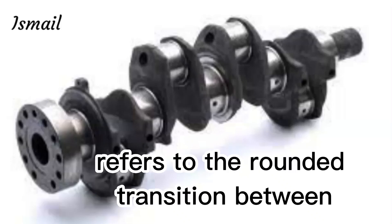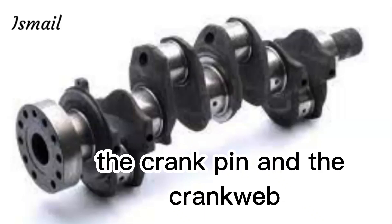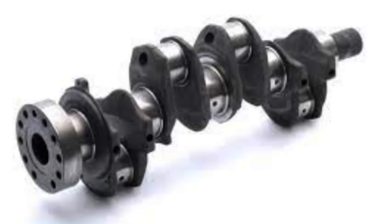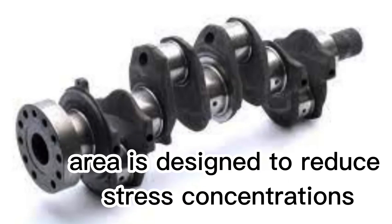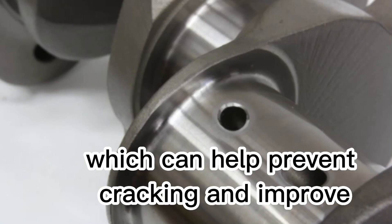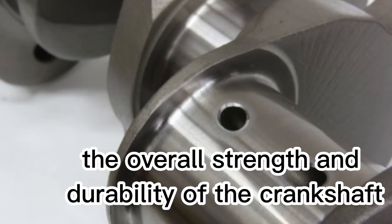The fillet radius in a crankshaft refers to the rounded transition between the crank pin and the crankweb. This curved or filleted area is designed to reduce stress concentrations, which can help prevent cracking and improve the overall strength and durability of the crankshaft.